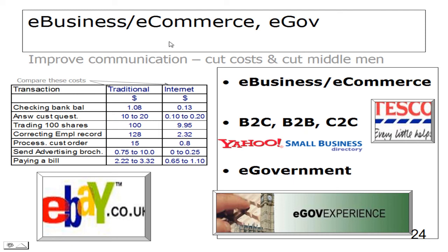E-business, e-commerce, and e-government improve communication, cut costs, and cut the middlemen. Tesco's has gone online - it took ten years to make a profit but it does make a profit online. Comparing figures: checking a bank balance might cost $1.08, but checked online it costs a tenth of that. Answering a customer request costs $10-20, but only 10-20 cents online.